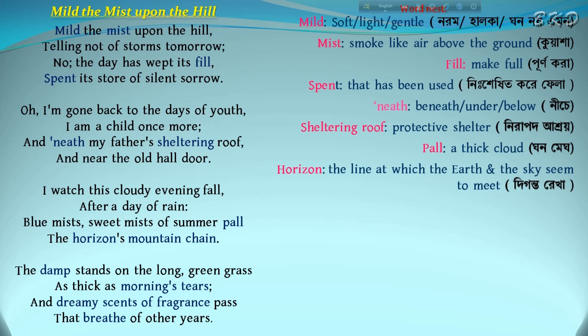Secondly, the mist has been referred to as 'sweet mist.' Why? Because the mist upon the mountain reminds the poet of the sweet memories of childhood. In other words, the mist stands for the joyful fragrance of nostalgia. It leaves a pleasant impression on the mind of the poet.